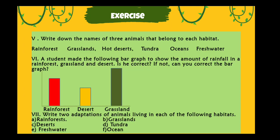Write down the similarities and differences between hot deserts and tundra — that is the cold deserts — in a Venn diagram. The fifth question is: write down the names of three animals that belong to each habitat: rainforest, grasslands, hot deserts, tundra, oceans, and freshwater.